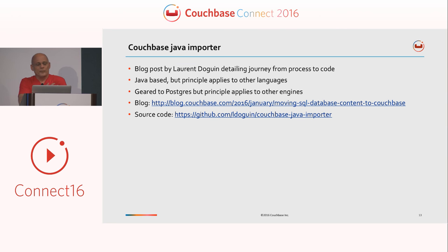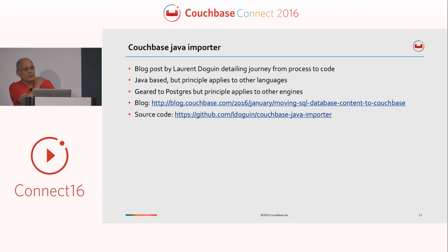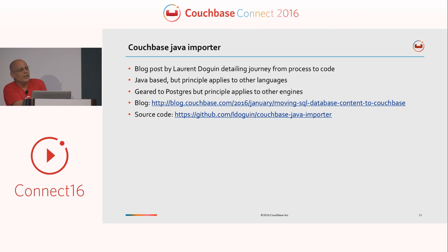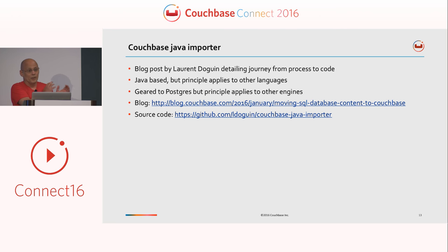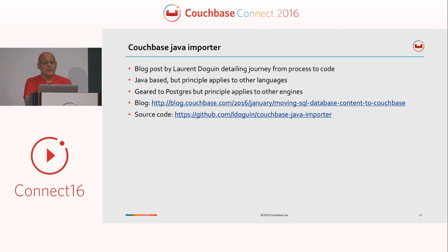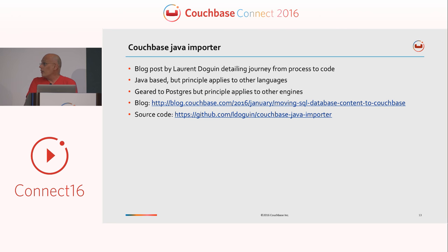On the open source front, there's a tool by Laurent Dagan, who is a professional services team member at Couchbase based in France. He's written a really nice and detailed blog post where he gives you all the steps for the journey from your relational database to Couchbase, all the way to actual code. His code is Java-based, but in general principle you can use any other language. His tool starts from Postgres, but again you can use the same approach for anything else. The blog URL and GitHub repository URL for the source are provided.